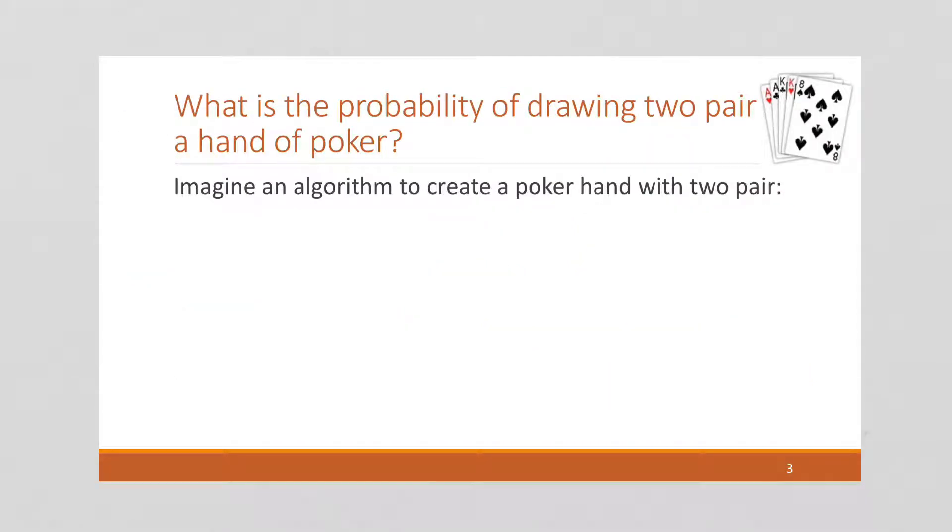So the first thing we're going to calculate is the probability of drawing two pairs in a hand of poker. Two pairs means I'm going to have two of one card, so in this example, two aces and two of another card, kings, and then one random card that does not belong to either of those sets. This two pair is different than four of a kind. It's different from if this were the same as the kings, that would be called a full house.